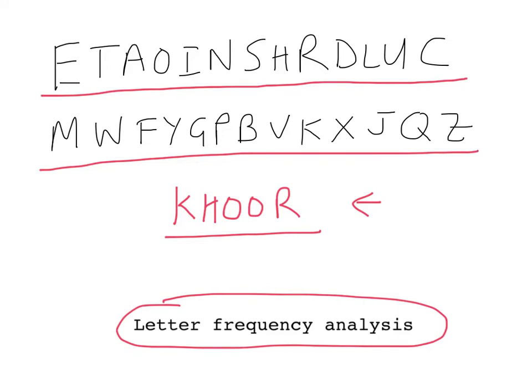And what this means is that the letter E is the most common letter in the written English language. T is the second most common letter, A is the third most common letter, and so on. Now obviously, individual messages won't necessarily follow this pattern.